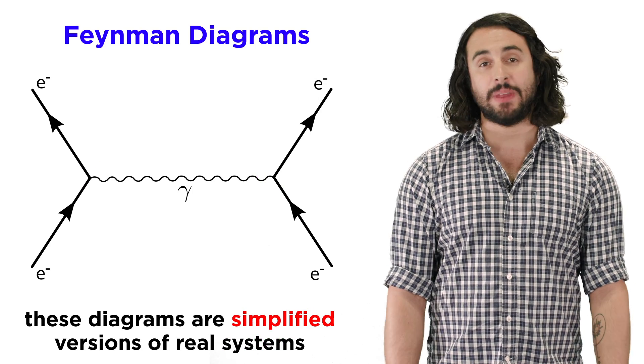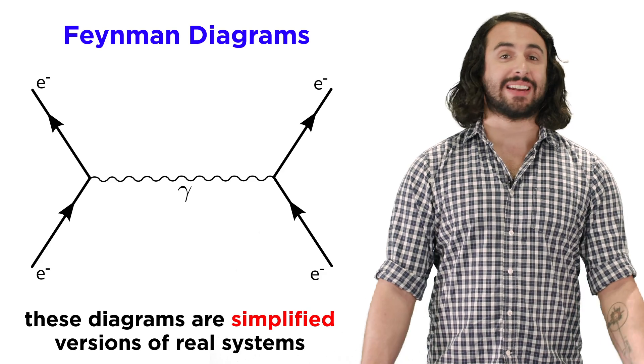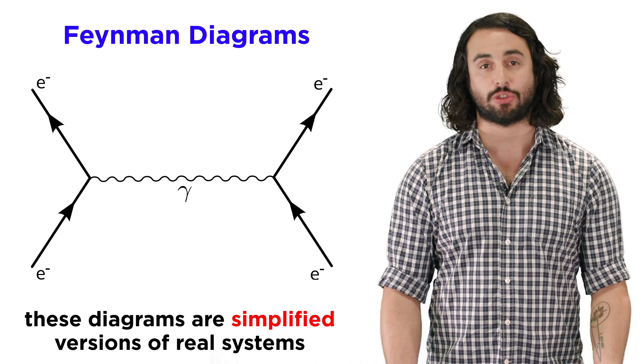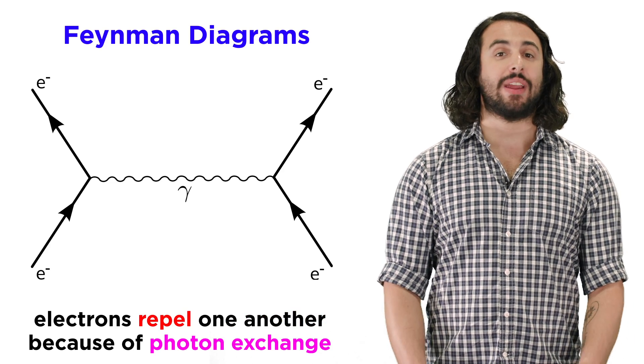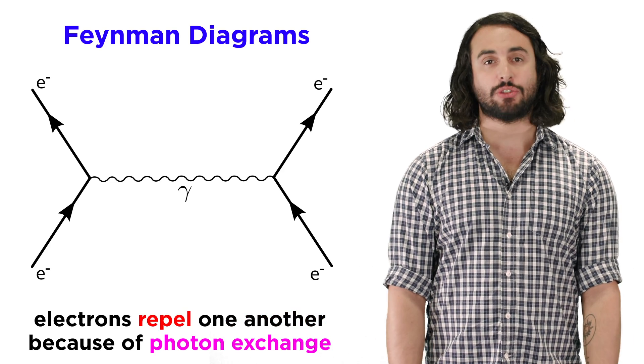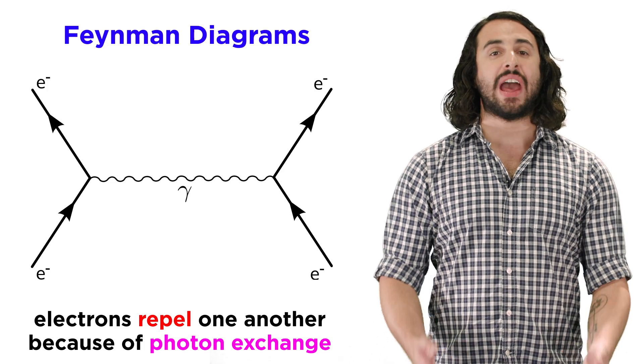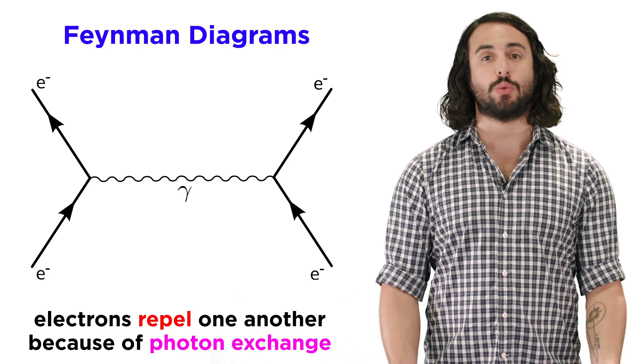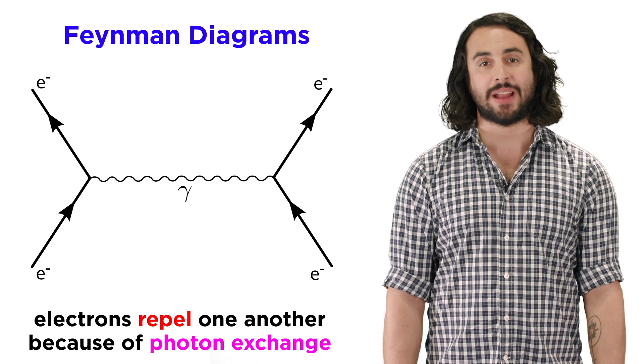These diagrams are mere reductions of reality. They do not contain all the information that could be pertinent to a system of one or more electrons, but they illustrate in a basic way that two electrons could approach one another and then have their paths deflected due to the exchange of one or more virtual photons that carry some momentum.